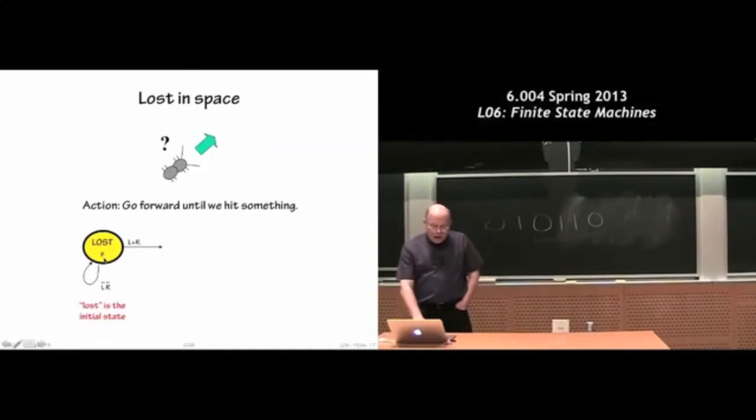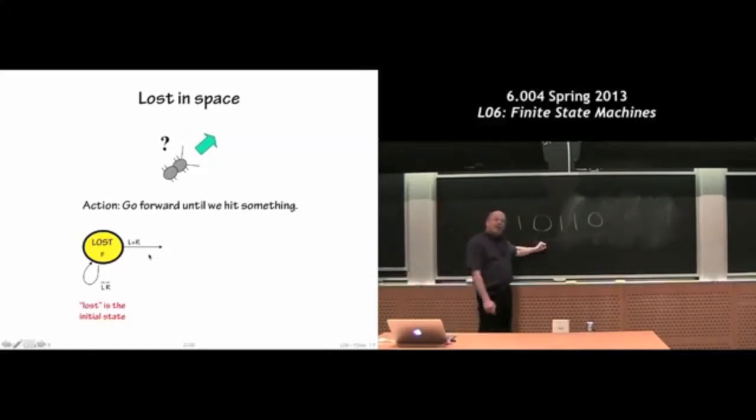And that means that one or both of my antennae will suddenly signal a 1 saying I've done that. So I'm going to basically, in the lost state, I move forward. So I can move forward, turn left, and turn right. That's what the ant can do. And if neither antennae is touching, I keep doing that. Otherwise, I've hit something, and now I'm going to change my behavior.